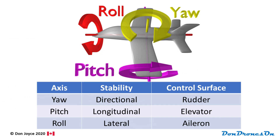Here's a great summary of the three axes, their corresponding stability names, and the primary control surface to adjust movement in that axis. We've talked about primary control surfaces — rudders, elevators, and ailerons — but there are several other bits on aircraft called secondary control surfaces. Let's quickly run through them.